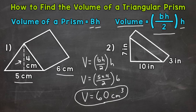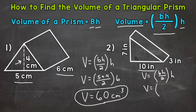Let's move on to number 2, and we'll start by writing out our formula. Volume equals base times height divided by 2, times the height of the prism. Now we plug in. The base of our triangular base is 10 inches, so we plug in 10 times the height, which is 7 inches, divided by 2. The height of the prism — the distance between the two bases — is 3 inches, so we multiply by 3.